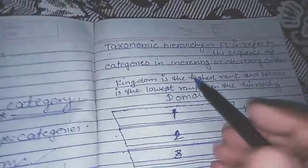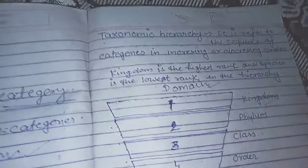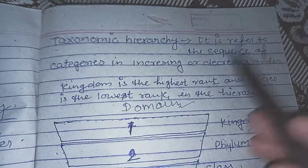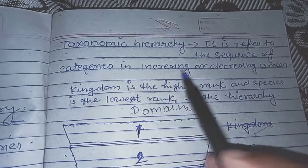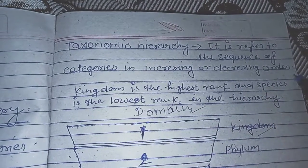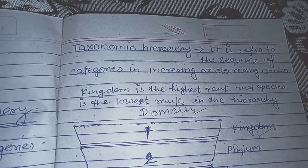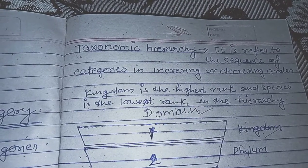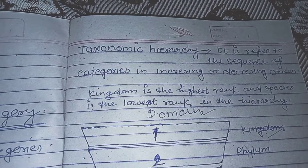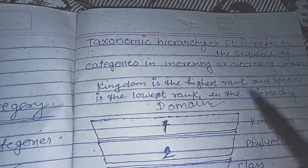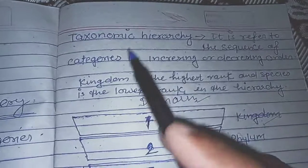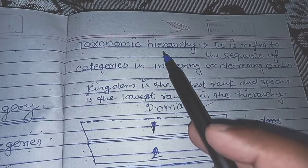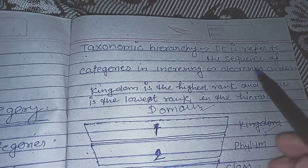How many taxonomic categories are there in the taxonomic hierarchy? It is referred to the sequence of categories in increasing or decreasing order. So we have seven obligate taxonomic categories, and the taxonomic hierarchy represents their sequence.